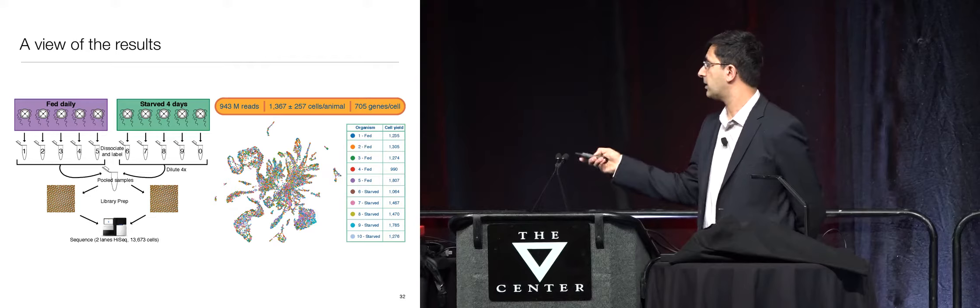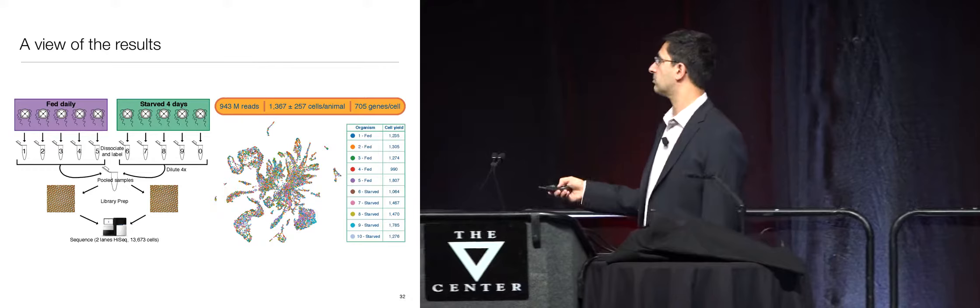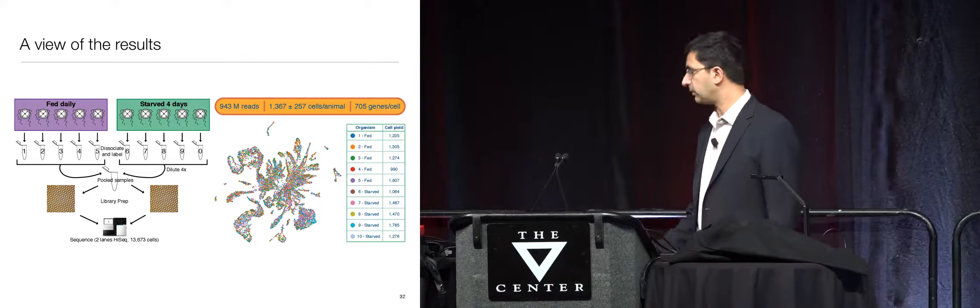Each color here is a different individual, and what you can see is they're all mixed up — which is actually a good thing. It means that in this experiment we didn't have what's called batch effect, namely it's an apples-to-apples comparison between these different individual jellyfish. Some of them have been fed and some have been starved for four days, and we want to learn about what that does to the animal at the molecular level.